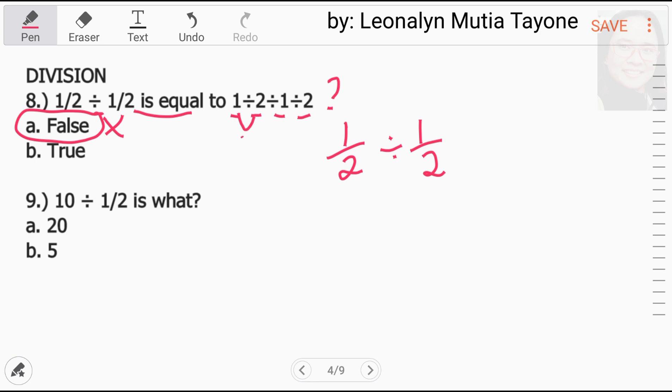1 divided by 2 that is 0.5. 0.5 divided by 1 and that is 0.5. 0.5 divided by 2 and the answer here is 0.25. 0.25 ay hindi pariho sa 1 half divided by 1 half and that is 1. 1 is not equals to 0.25.